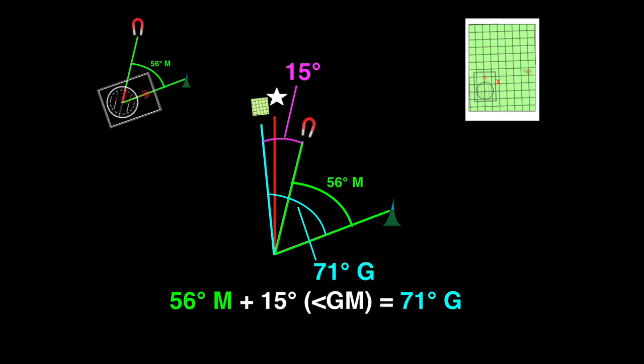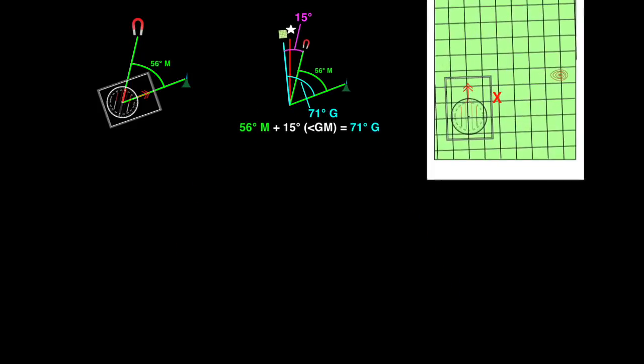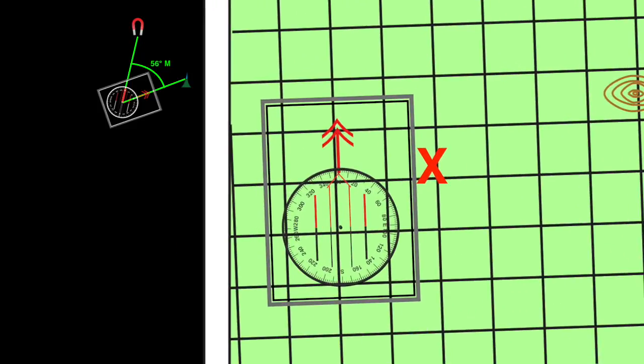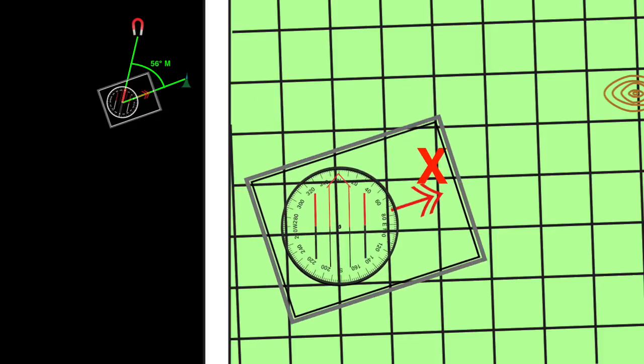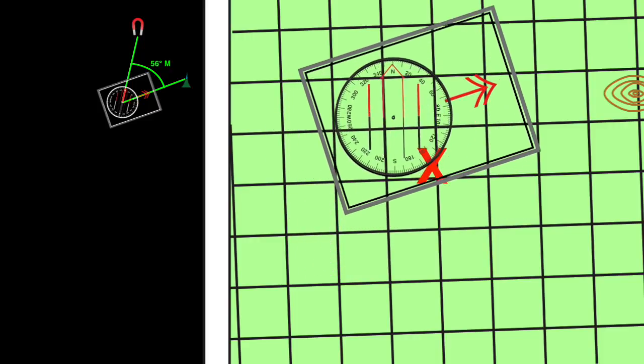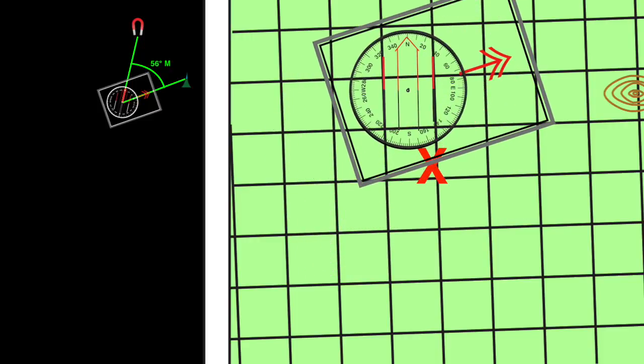Now we are ready to plot the bearing onto our map. We set 71 degrees into our compass dial and then we move the entire compass so that the orienting lines are parallel to the grid lines and the edge of the compass touches the location where we took the bearing. Draw a line along the edge of the compass and we see that it passes through pointy peak.